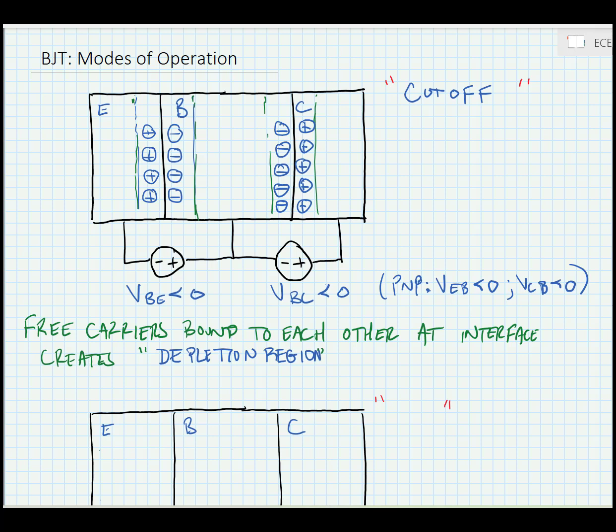Now, this region where no current can flow looks like an insulating region, and the area that's full of free carriers looks more like a conductor. So we model this as a parallel plate capacitor.